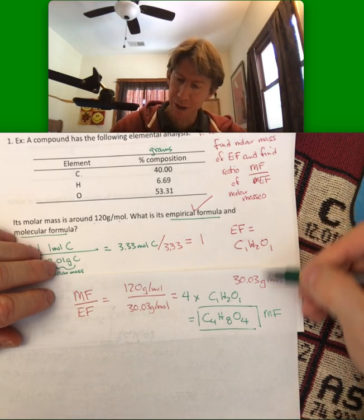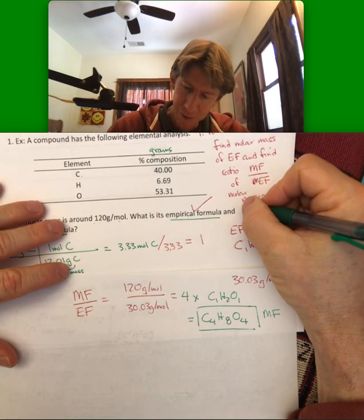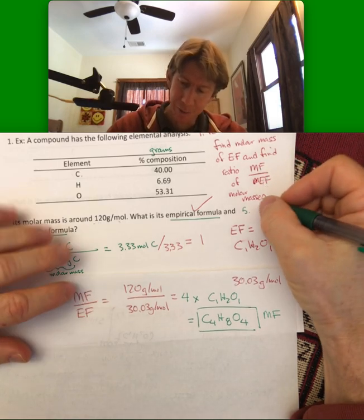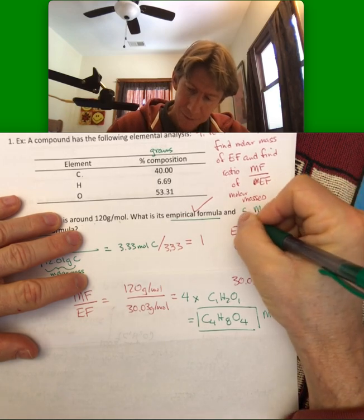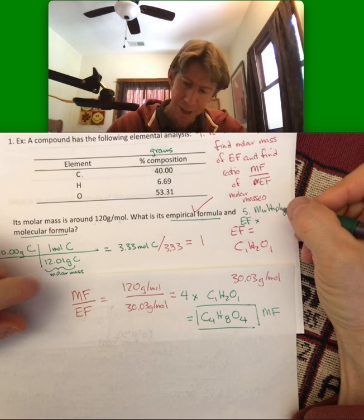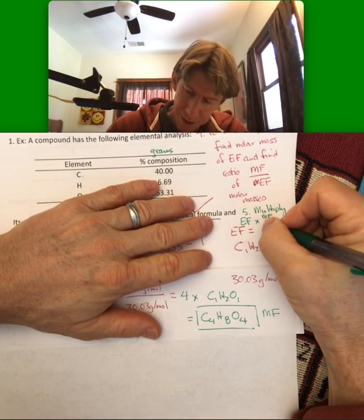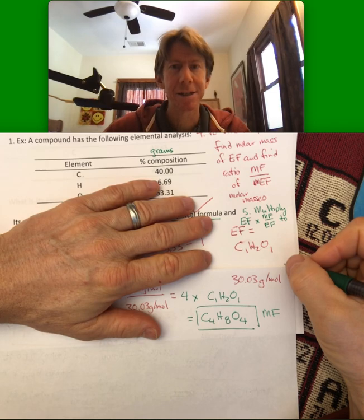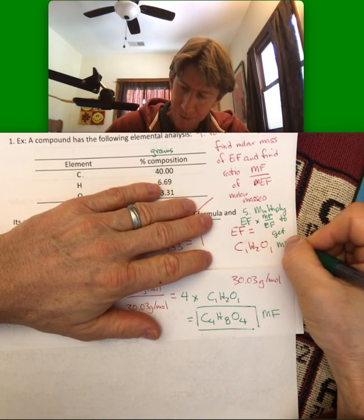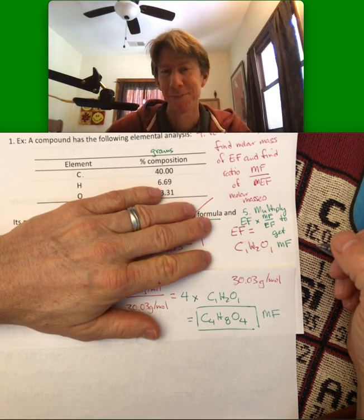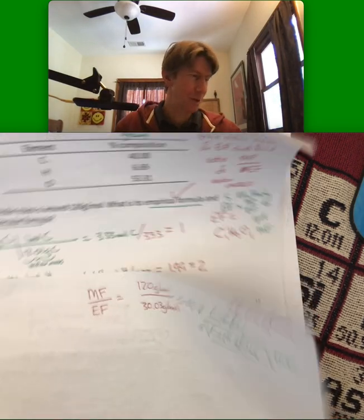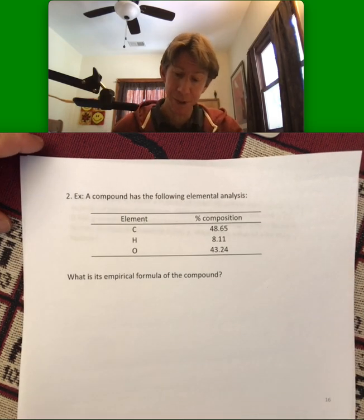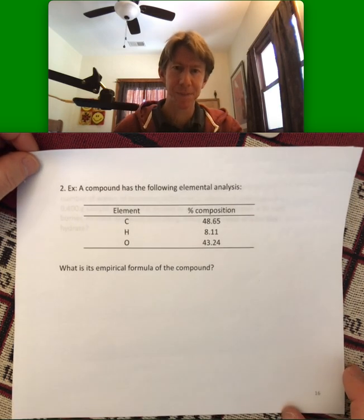We have our empirical formula we have our molecular formula and I guess direction number 5 is multiply the empirical formula times whatever this number is, molecular formula over empirical formula, to get molecular formula. Well that seems like a decent outline of how to do this. Let's do some more and see if we can fit them on the correct pages. This one just asks what is the empirical formula, same type of problem. Let's go ahead and tackle it.